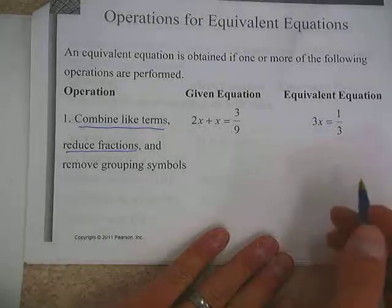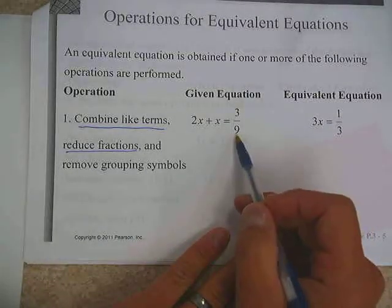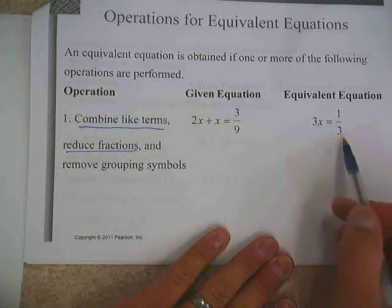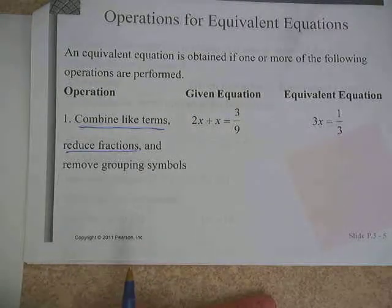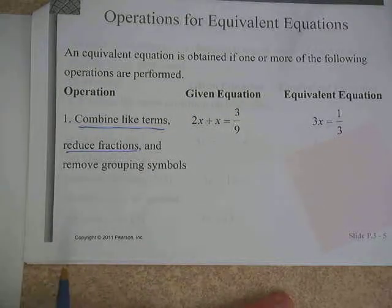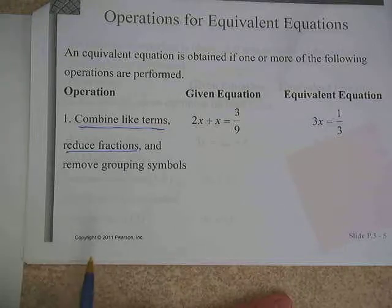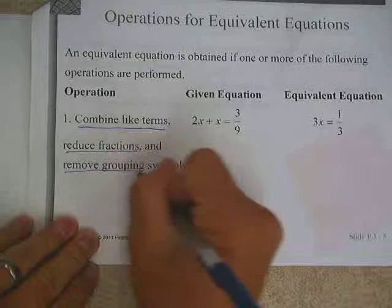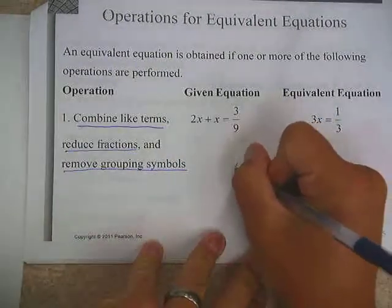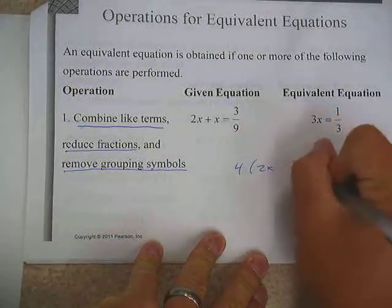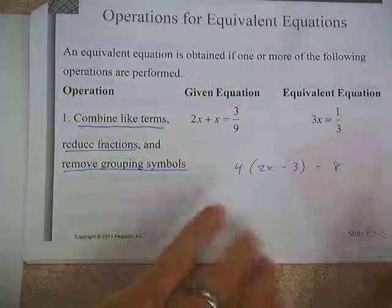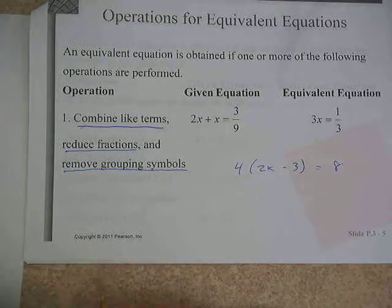Number 2 here is reducing fractions. If we have any fractions that need to be reduced like 3 ninths for instance, notice what they did. They rewrote it to 1 third. So if you see any fractions that aren't reduced, that would be another job of simplifying you could do. And then finally removing grouping symbols.